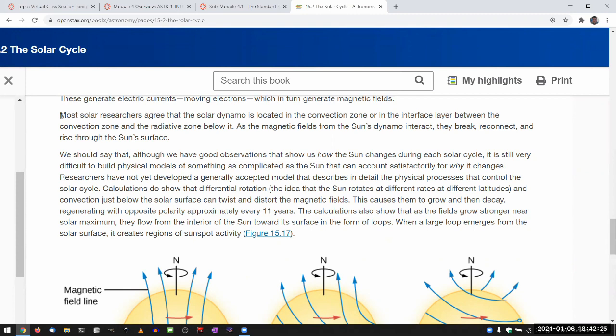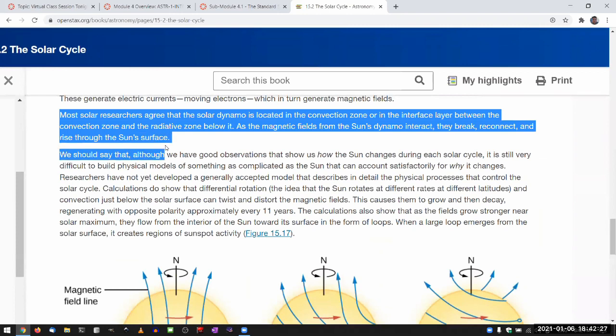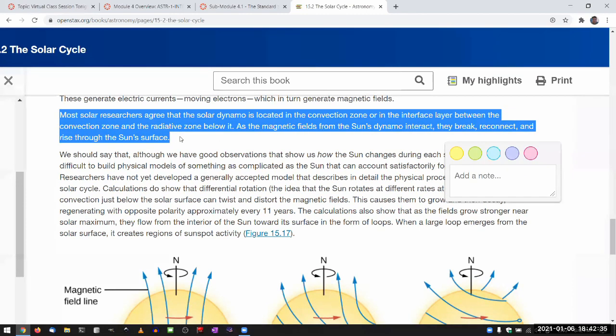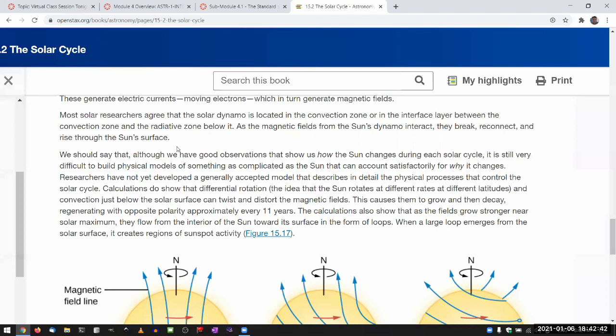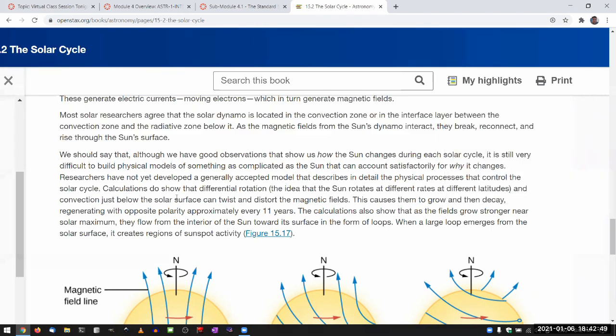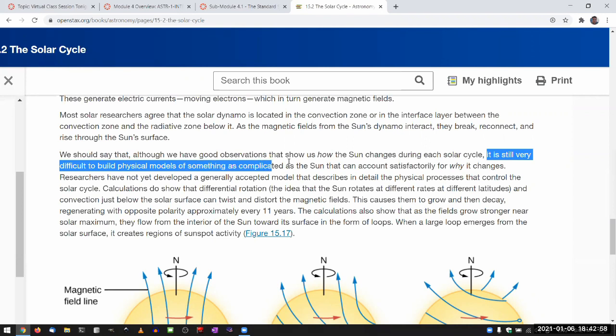And I think this is good to highlight as a kind of cross section of scientific process. So there is what you might call settled science, as in this much, we are pretty sure that this seems to be how something should happen. And the expanding frontier of ignorance has to do with the details, because the detailed dynamics of this is very complicated. That's why the textbook says it is still very difficult to build a physical model of something as complicated as the sun.